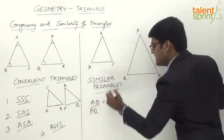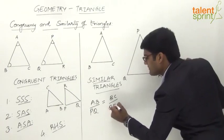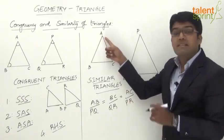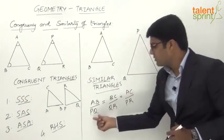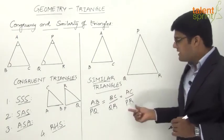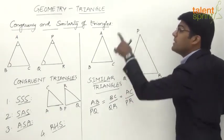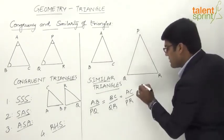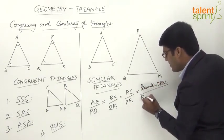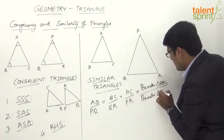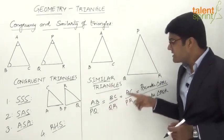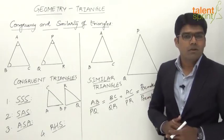The ratio of corresponding sides is equal: AB to PQ equals BC to QR equals AC to PR. The ratio of any two corresponding sides is also equal to the ratio of the perimeters of the two triangles — that is, the perimeter of triangle ABC divided by the perimeter of triangle PQR. So in similar triangles, the ratios of corresponding sides equal the ratio of the two perimeters.